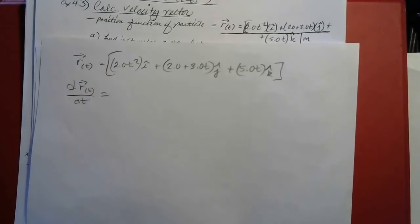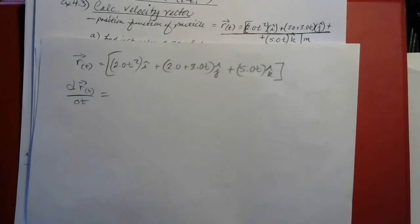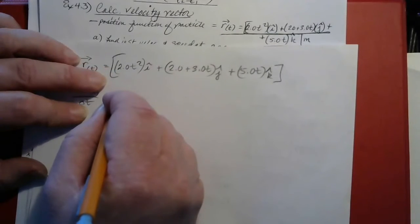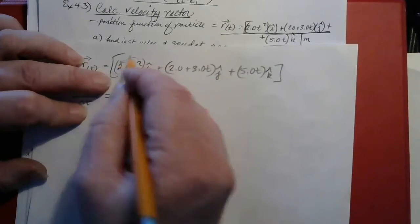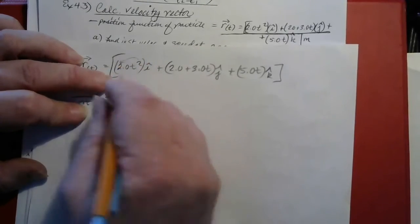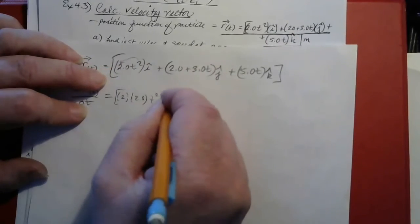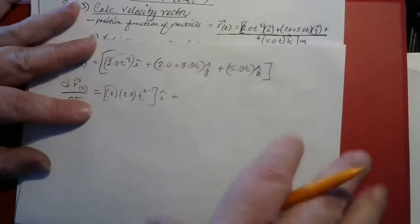To take the derivative, you essentially multiply the coefficient by the current exponent of each variable and then reduce the exponent by 1. So for 2t squared, this would be equivalent to 2 (the exponent) times 2.0 (the original coefficient), times t to the 2 minus 1, times unit vector i. We can clean that up and make it look nicer.